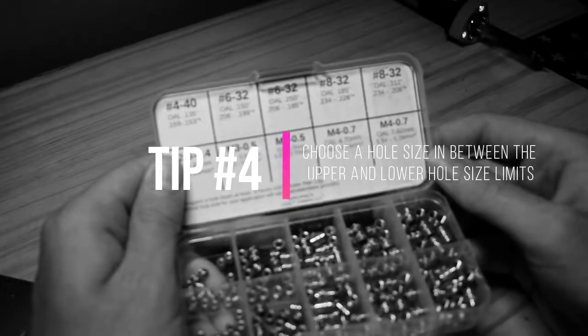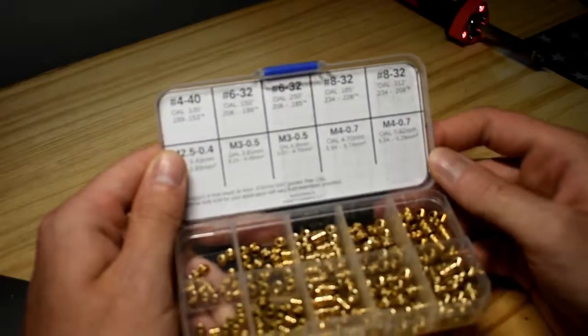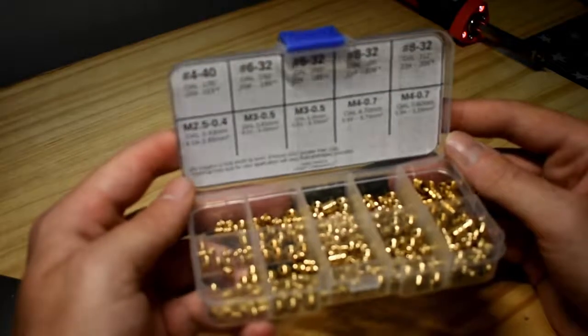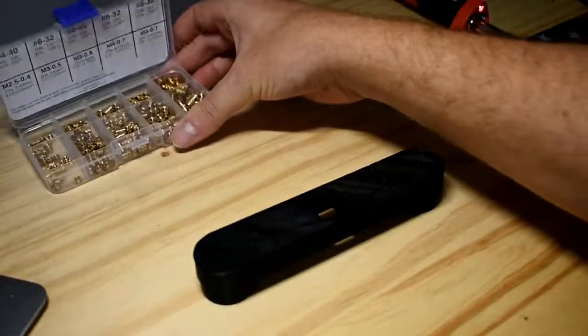So I usually do a number in between those and I'll do something, I'll do around 200 mils.